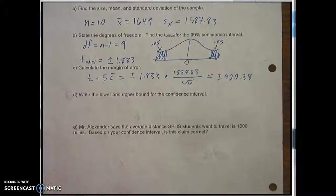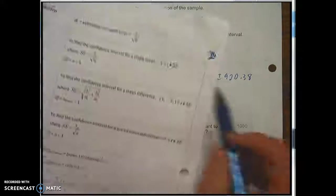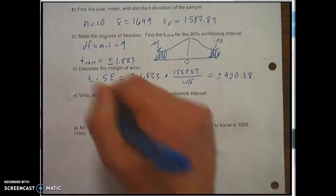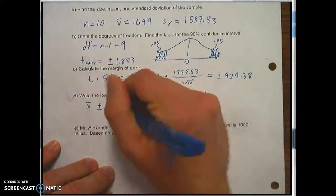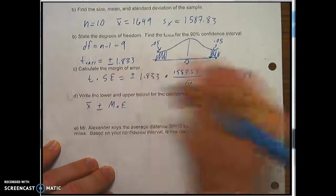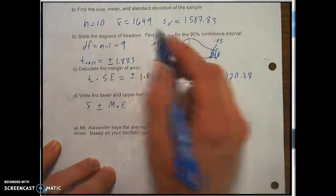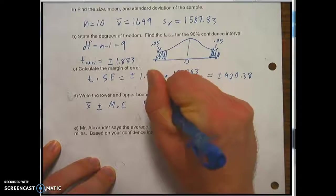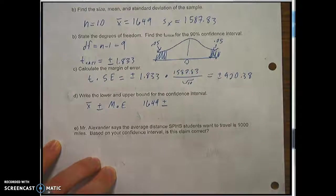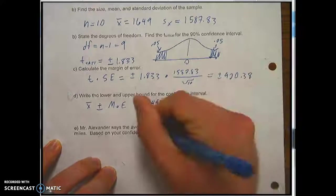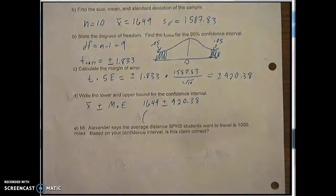So to get the lower and upper bound formula chart, once again, x bar plus the margin of error. So our x bar was 1649 plus and minus 920.38. So our interval, 1649 minus 920.38, 728.62.